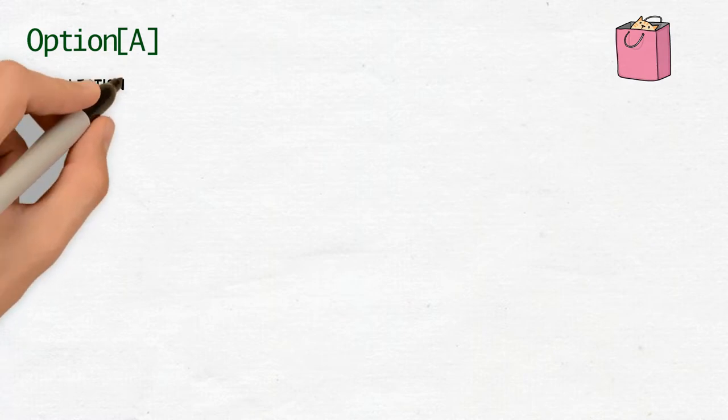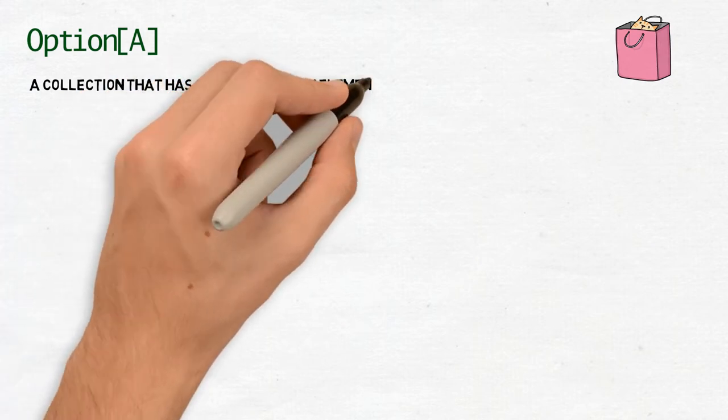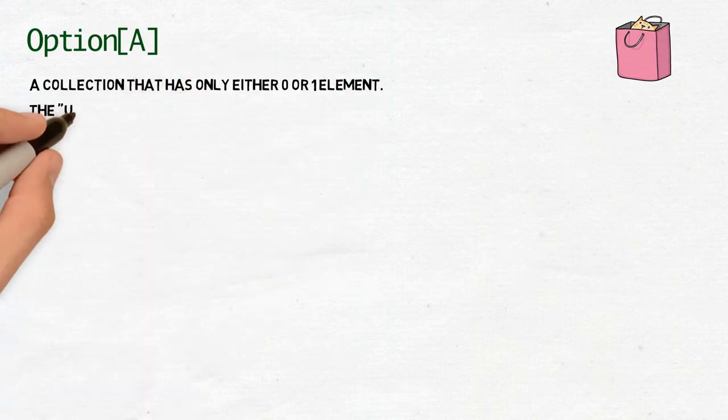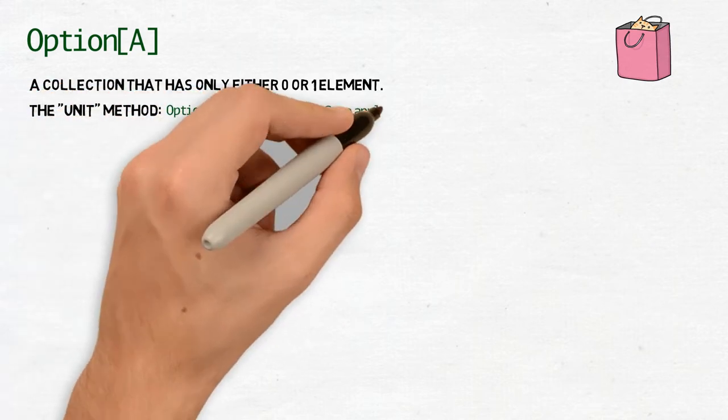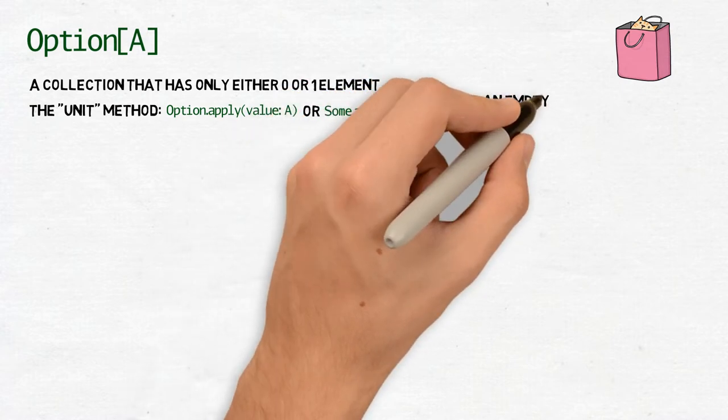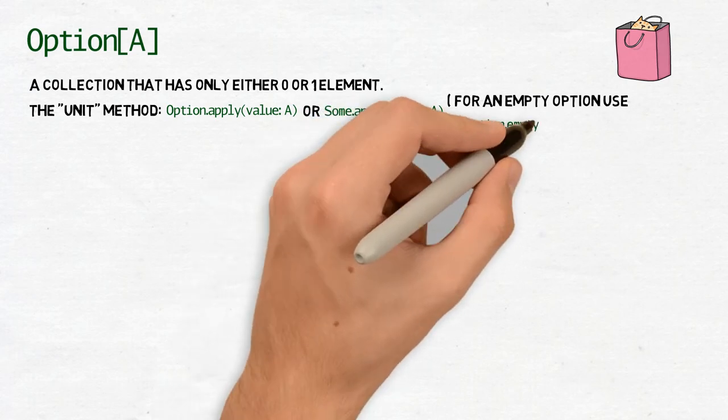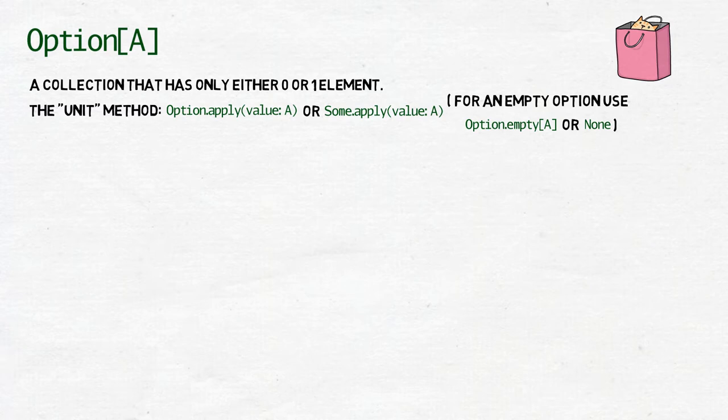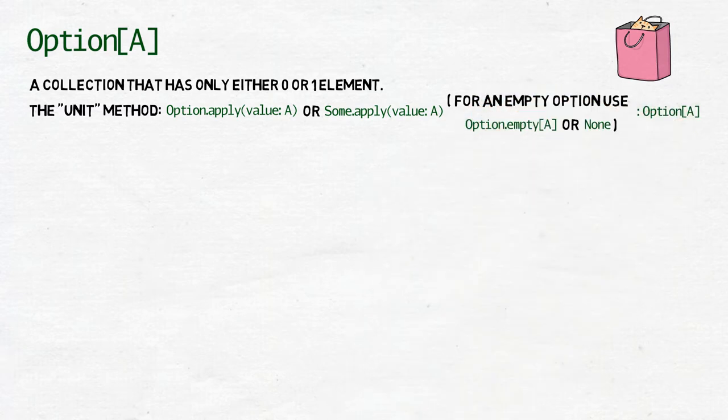You can think of an option as a collection that can have only either zero or one element. Its unit method is simply its constructor, which takes as the argument exactly one element of a given type of A and returns an instance of option of A with that element inside. If you want to have an option with zero elements, you call methods option.empty of A. You will still receive an instance of option of A even though there will be no element of the type A in it.